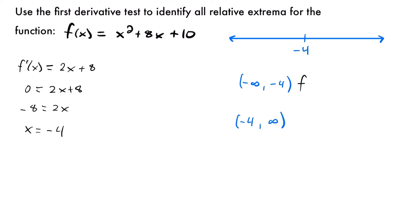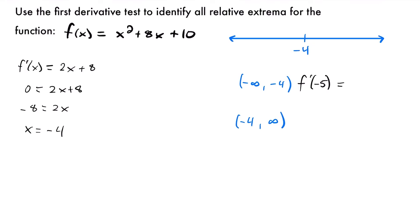I'll pick a value between negative infinity and negative 4 — I'm just going to choose negative 5. You could pick any value: negative 6, negative 7, it doesn't matter, just pick something between the endpoints. If we plug that into our derivative, we'll have 2 times negative 5 plus 8, which is negative 10 plus 8, which equals negative 2. So the derivative at that point is negative 2 — a negative slope — meaning the function is decreasing on this interval. We write a minus on our number line.